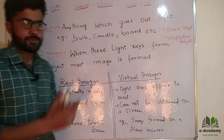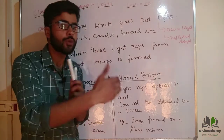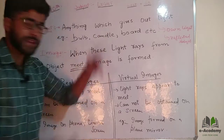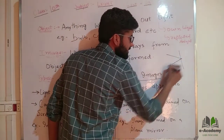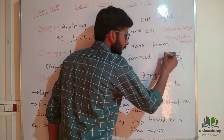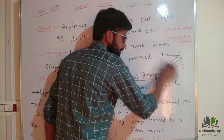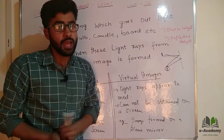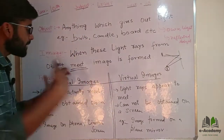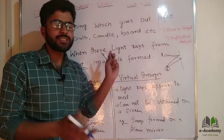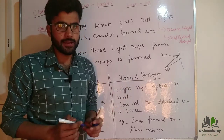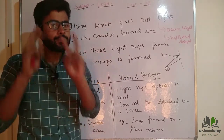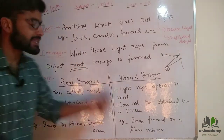The second point is: what is an image? When these light rays get reflected from the object and these light rays meet at some point — or we can say they actually meet or they appear to meet — then an image is formed. So image is formed when light rays from the object meet. Now we have two types of images: first is a real image, and second is a virtual image.